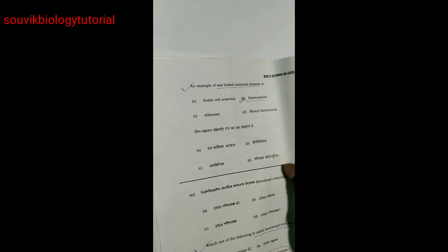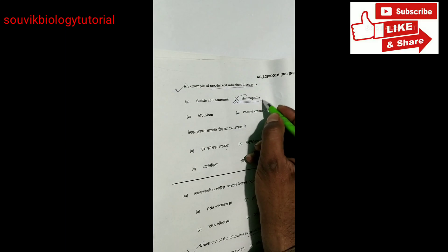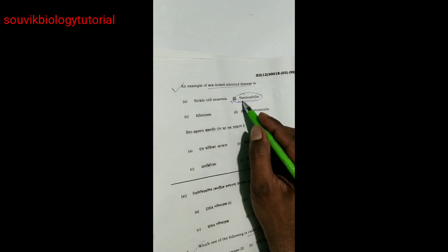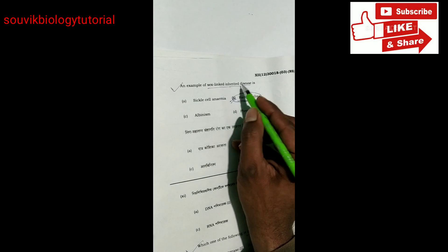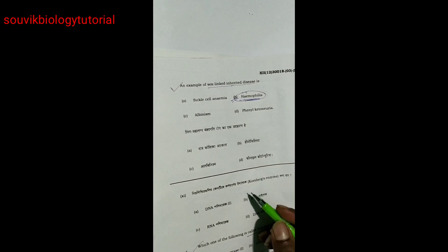Next question is an example of sex-linked inherited disease. Haemophilia. Haemophilia and color blindness also. Haemophilia is the sex-linked inherited disease. Actually X-linked recessive disease. So haemophilia is the right answer.